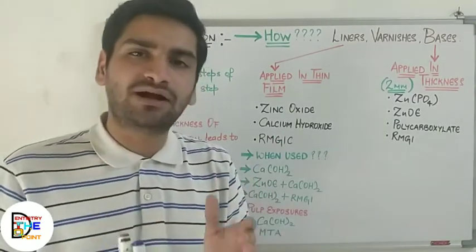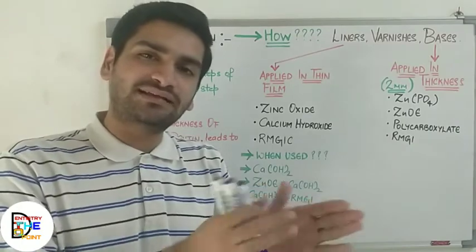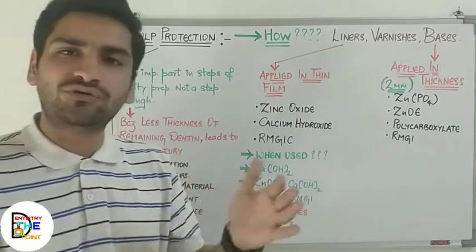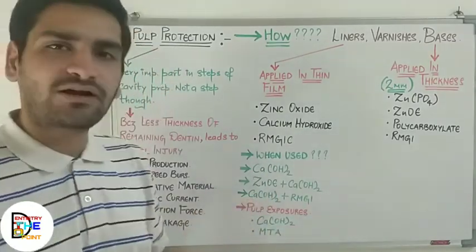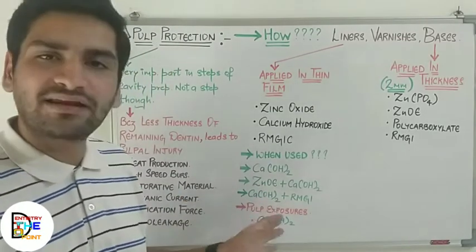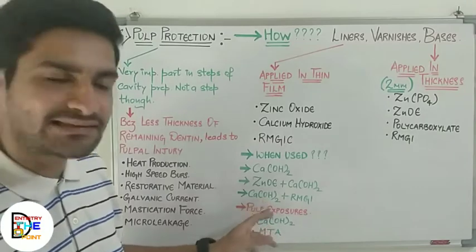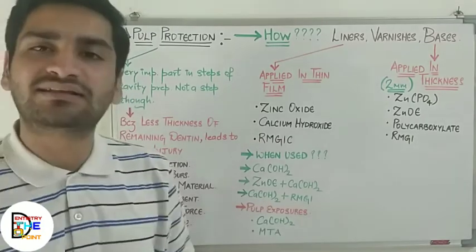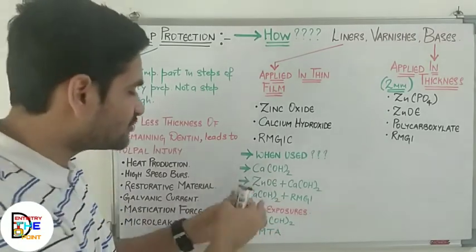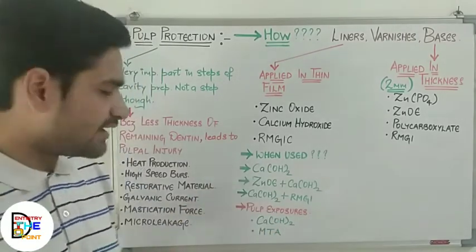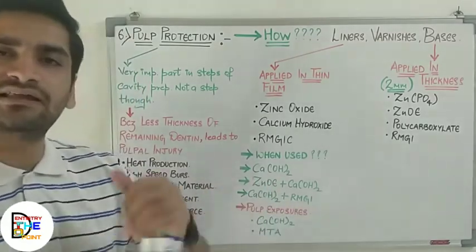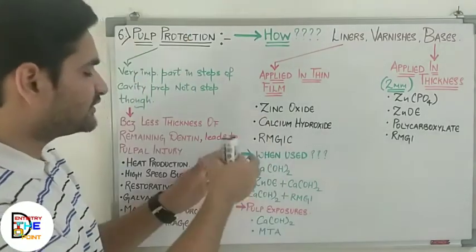However, when the phosphoric acid used during composite restoration acts on the calcium hydroxide, it is going to dissolve it — so there will be no benefit of placing that medicament or liner. Therefore, you need to cover this calcium hydroxide with resin modified GI (RMGI) so that the composite restorative material does not dissolve this liner or medicament. Once covered with RMGI, the composite restoration can be done on top.